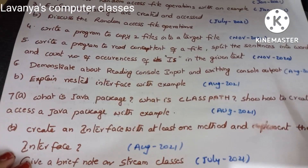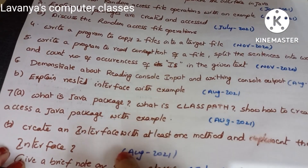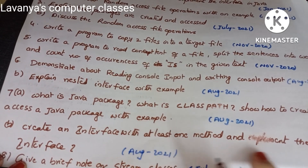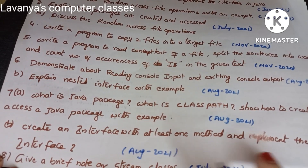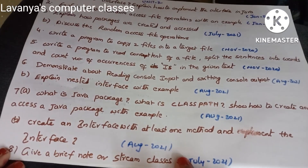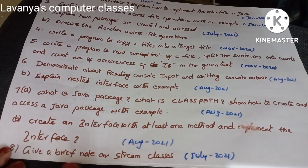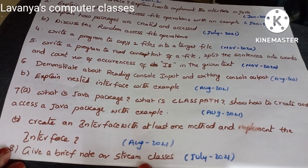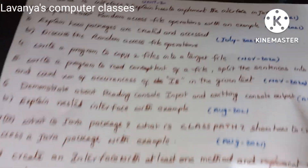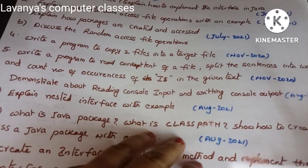'Create an interface with at least one method and implement the interface' — August 2021. 'Give a brief note on stream classes' — July 2021. These are the unit two questions.